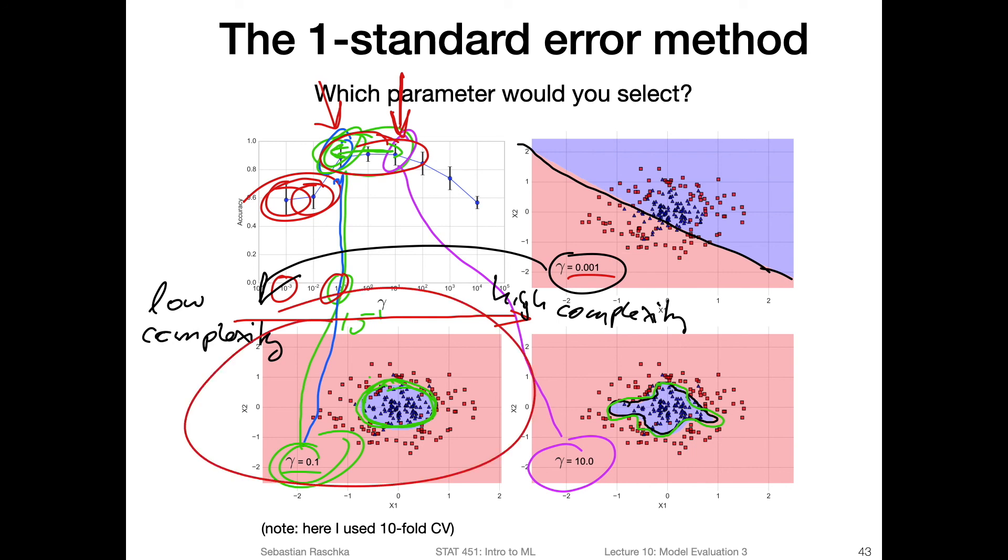And the simplest one would be the one to the left, because it's the smallest gamma, it's within one standard error of the best one. So we can actually select this model. You can maybe also try to repeat this analysis with k in k nearest neighbors. Here in k nearest neighbors, it would be the other way around. The model with low value of k, with the smallest value, let's say k equals one, would be the most complicated one, most complex one, because the decision boundary would be most complicated. And the highest k would be low complexity, because that would create the simplest decision boundary.